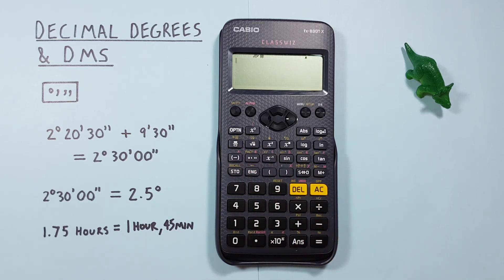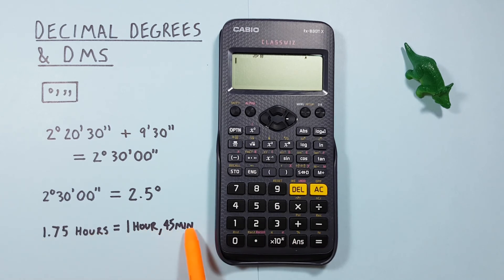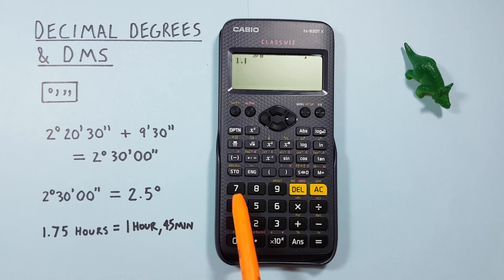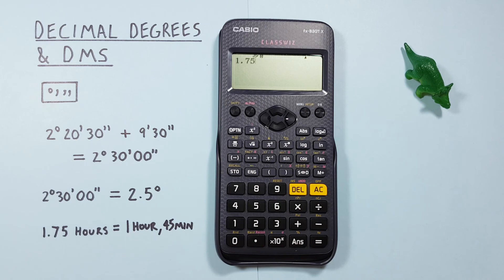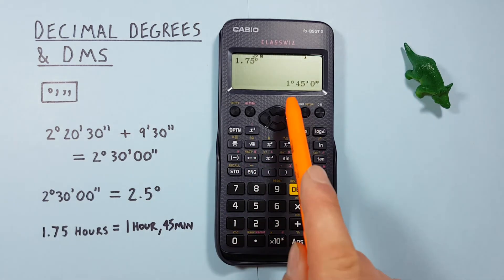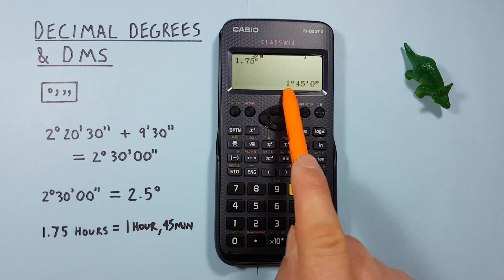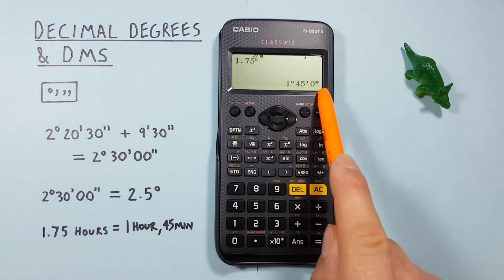This also works for time calculations. Like let's say we wanted to convert 1.75 hours into hours minutes seconds. Well it works the exact same except we swap out degrees for hours. So we can enter this as 1.75 hours, and then convert that with the degrees symbol. And we see it's the same as 1 hour 45 minutes 0 seconds.